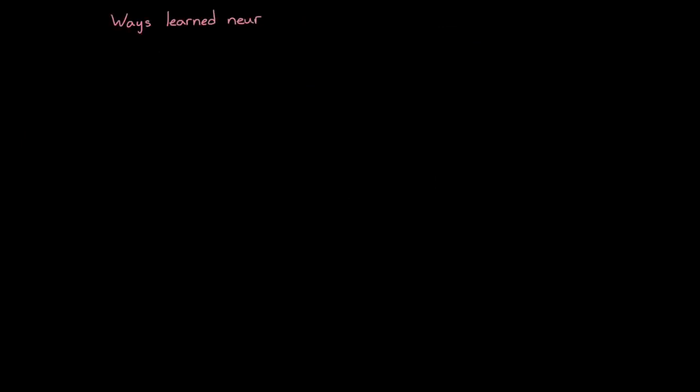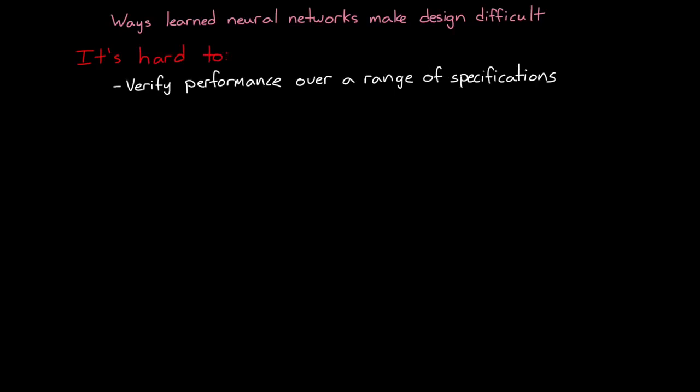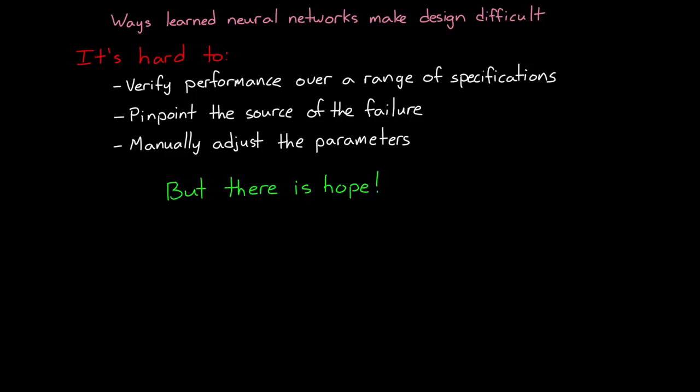Okay, so these are some of the ways that using learned neural networks make design difficult. It's hard to verify their performance over a range of specifications. And then if the system does fail, it's hard to pinpoint the source of the failure. And then even if you can pinpoint the source, it's hard to manually adjust the parameters or the structure, leaving you with the only option of redesigning and starting the training process over again.